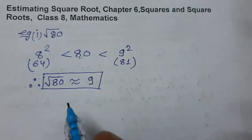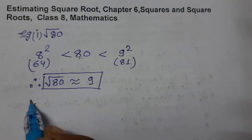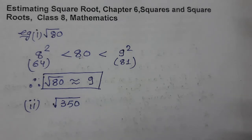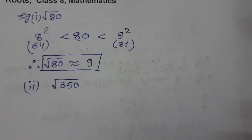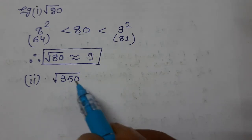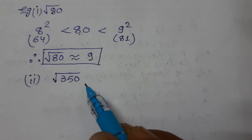Suppose we need to find the square root of 350. Now we need to find the square root of 350. First thing is that we need to find which two numbers' squares does 350 lie between. So you have to think about it.